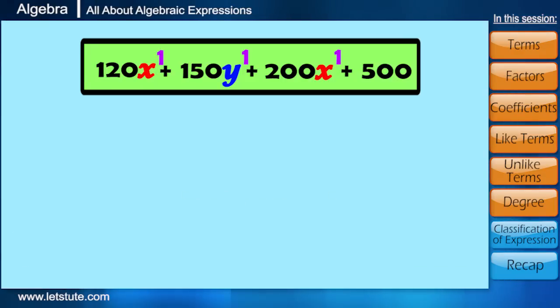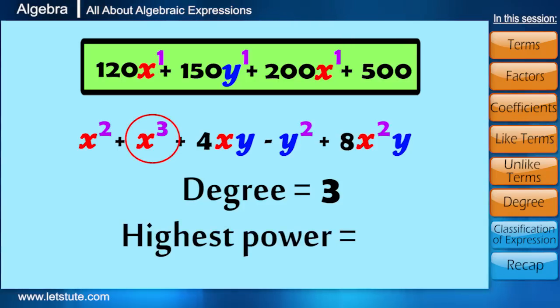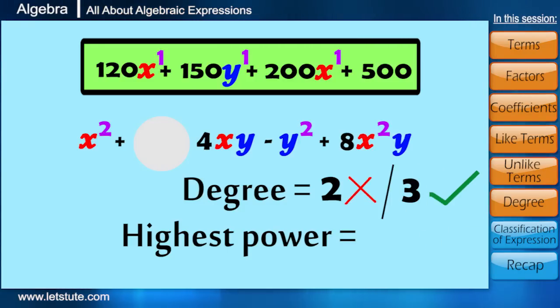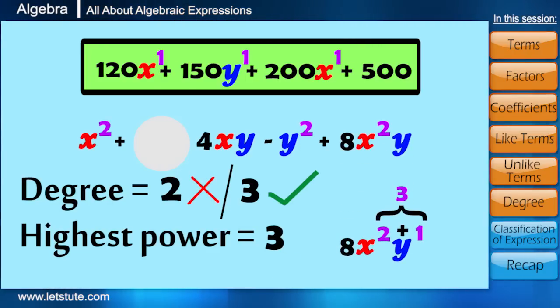Now, look at this expression. Can you tell the degree of this? It is 3 because the highest power of X is 3. Now, if I remove X cube, then can you tell the degree of this? Are you going to say that the degree is 2? So let me tell you, if you are thinking that the degree is 2, then you are wrong. Here, the degree is still 3. Because when we have two variables in a term, we should add the powers of both.